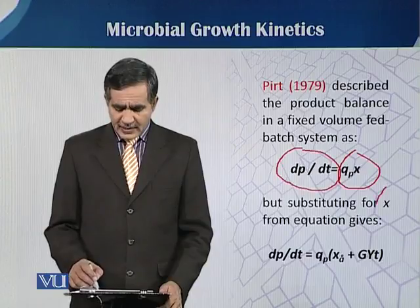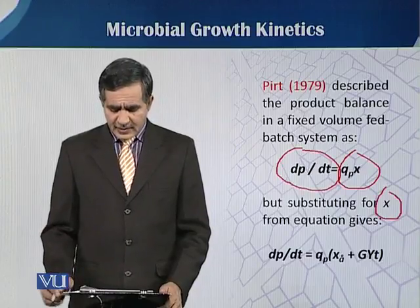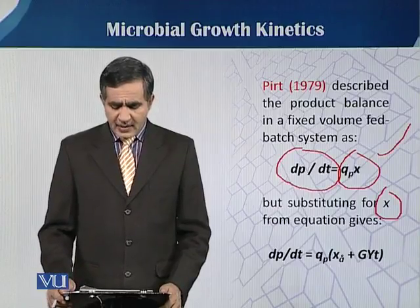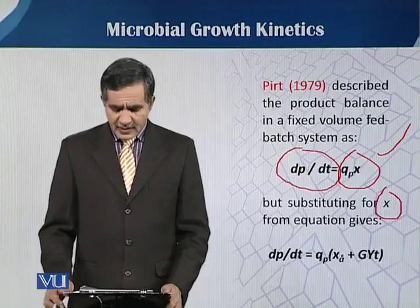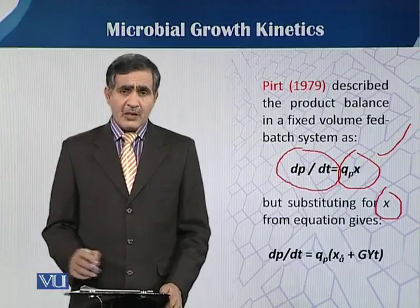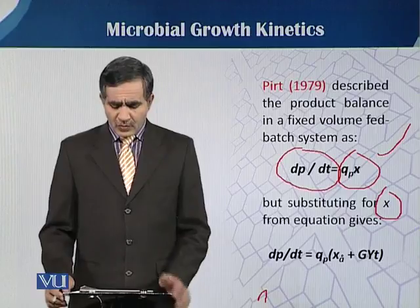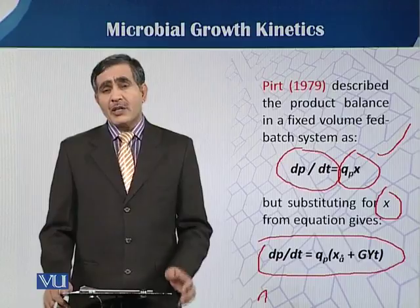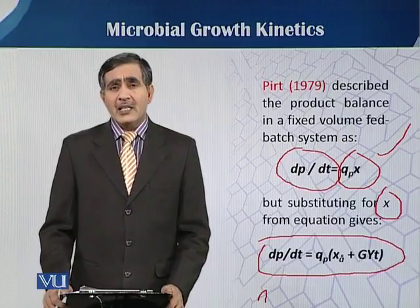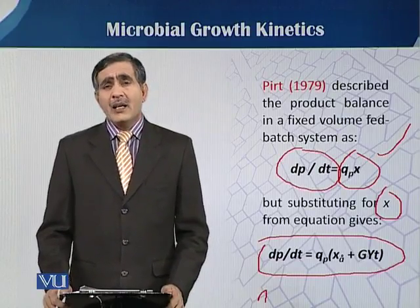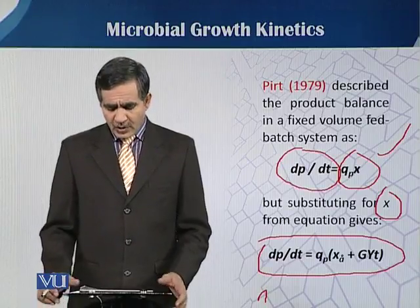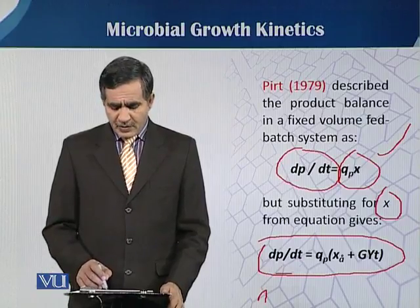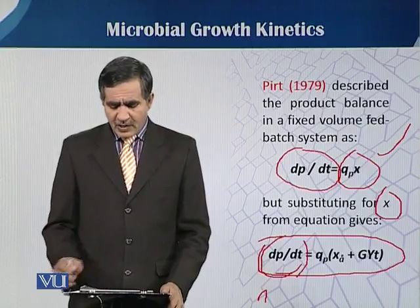By substituting x here, if we put dp/dt equal to qp·x into our previous equation in which we have x(t), we get a combined equation. In the previous module we discussed that x(t) is equal to x_a plus G·t. So if we put mu equal to the specific growth rate expression, we can derive this equation.